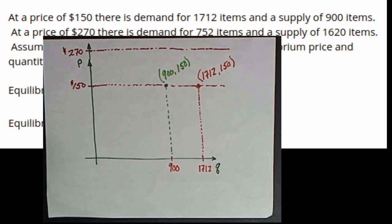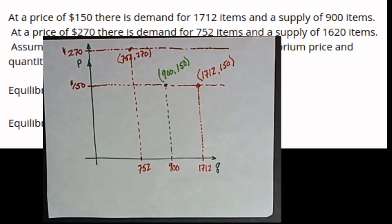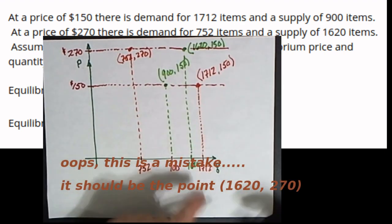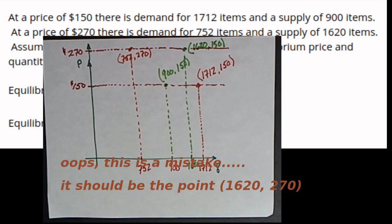At $270 the demand is less. The demand is 752. That means that there's the point 752, 270 on the demand curve. And finally we've got the point 1620, 270 on the supply curve.